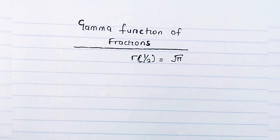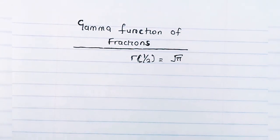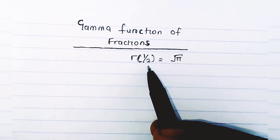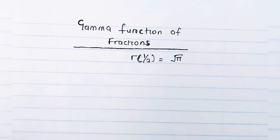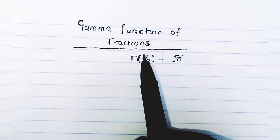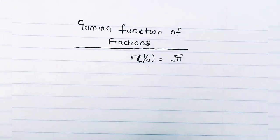Today we're going to look at gamma functions of fractions — specifically, how to solve gamma functions when you are given things like Γ(3/2), Γ(7/2), and so on. The fractions you'll be given in gamma functions are going to have a denominator of 2. Any other fraction you're given, you'd be advised to use a table of values.